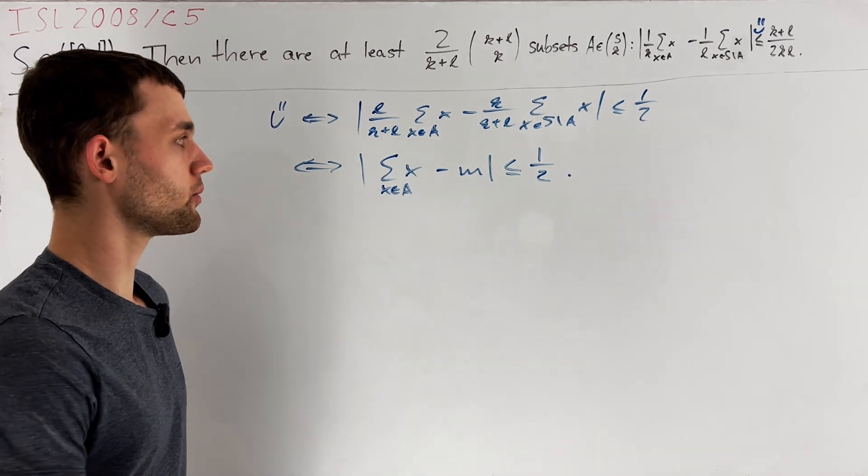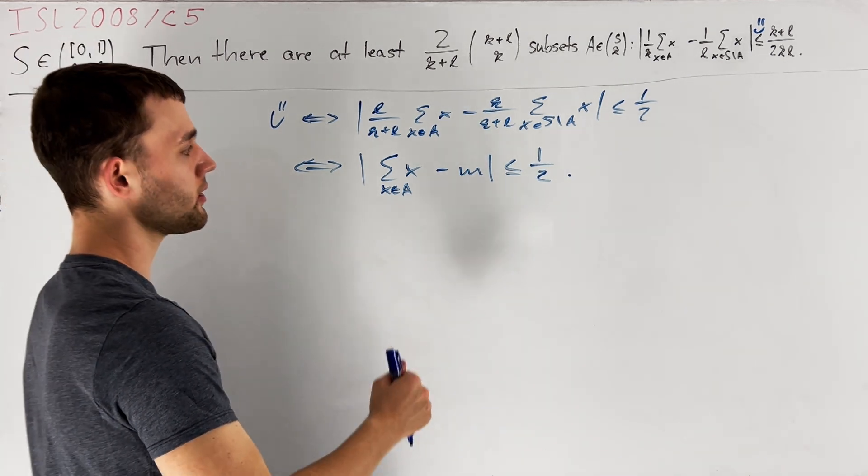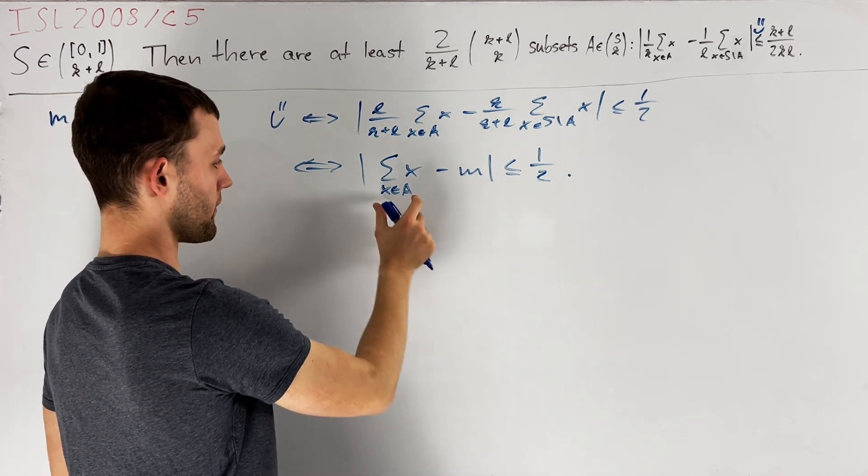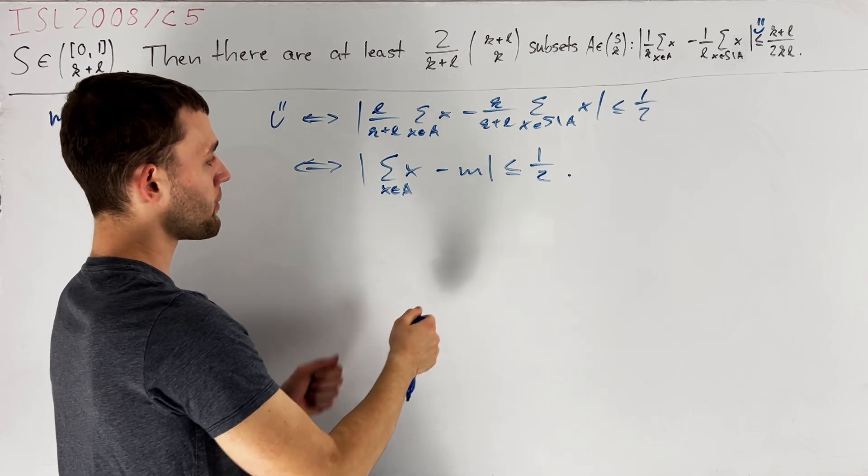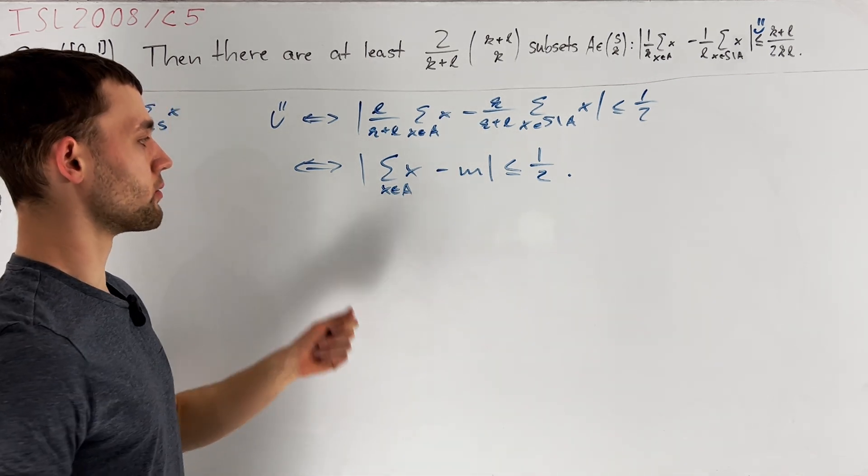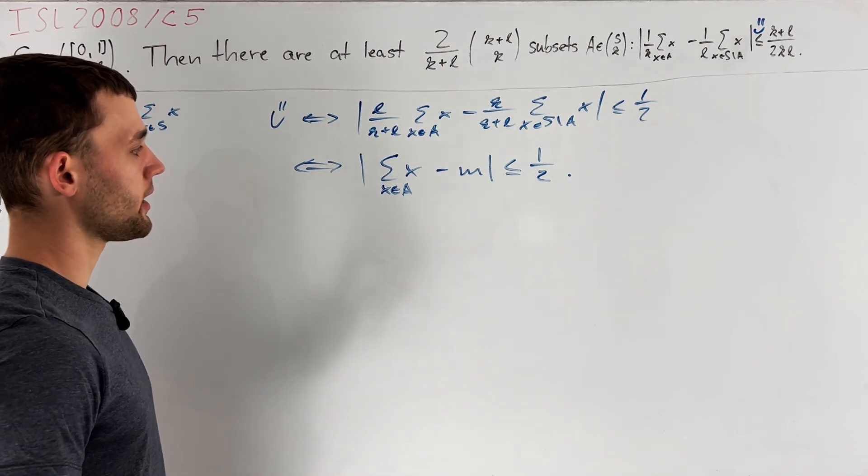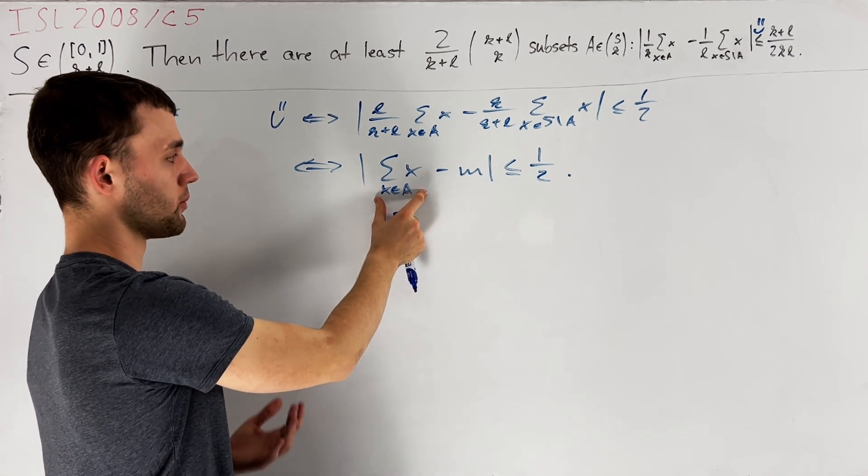This is a crucial observation which we want to combine with the fact that first, the midpoint of our interval is exactly the average value of this sum by definition. And secondly, when we perturb our set A a bit, meaning that we remove one element from it and add another element from S to A again, then in absolute value this sum will change by at most one.